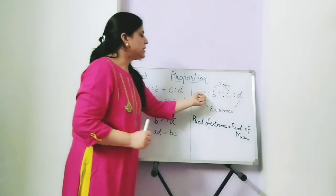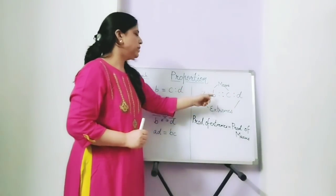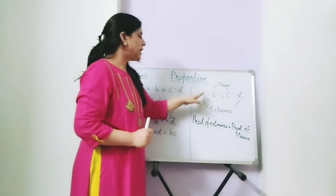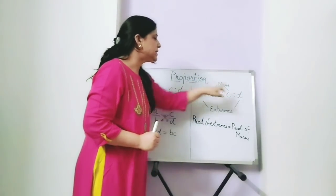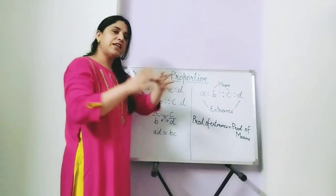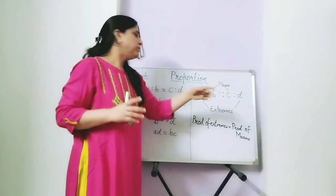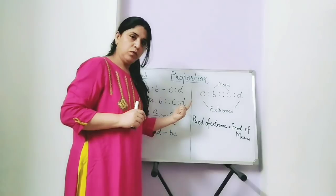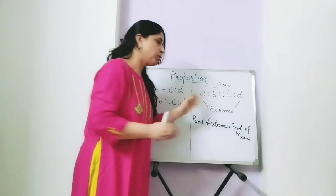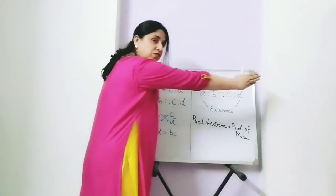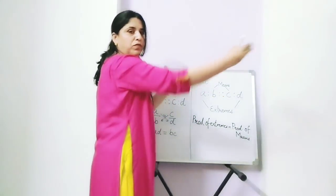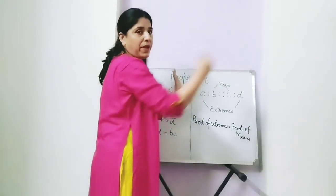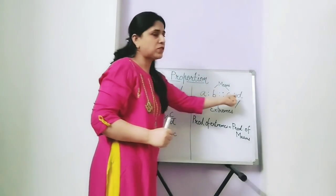Now if you see this proportion, A ratio B is proportional to C ratio D, we can say that A and D, which are at the extreme ends, they are called extremes. They are called extremes because they are the extreme terms — when we write the four terms of the two ratios, they are at the extreme ends. So they are called extremes.